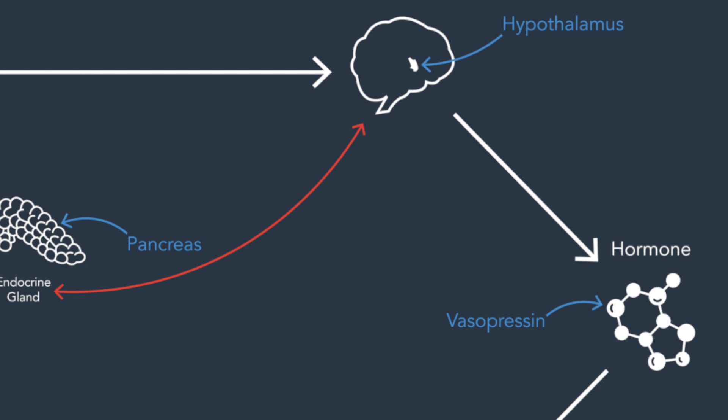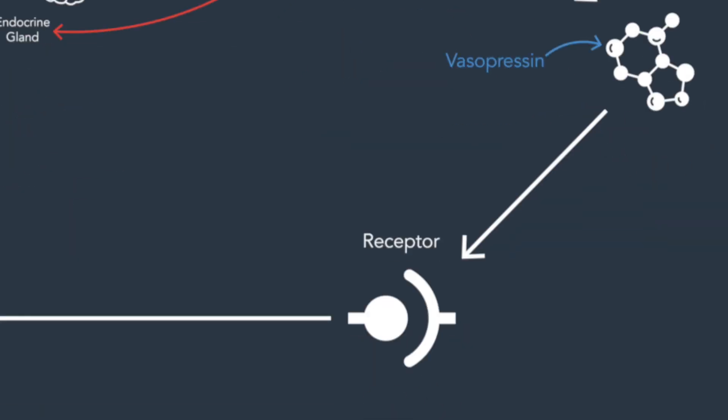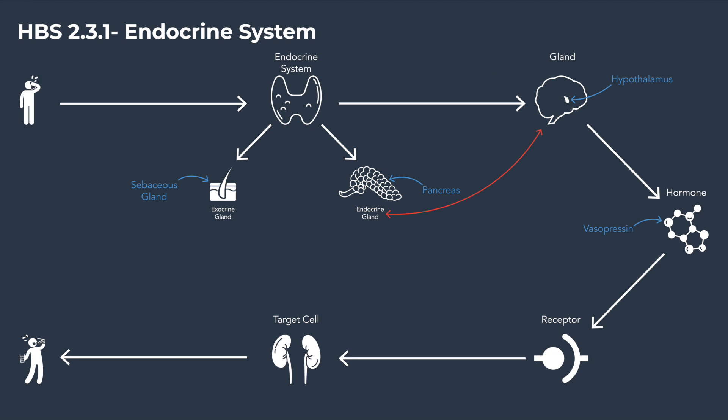So the hypothalamus is going to release a hormone. Over here on the right-hand side, you can see my little chemical diagram — here is the visual. The hormone that the hypothalamus releases is called vasopressin, also called antidiuretic hormone or ADH. This hormone is going to float through the blood and make its way to a receptor on the target cell, which is in the kidney. This hormone's job is to get the kidney to retain more water from the filtrate, which we'll learn about when we learn about the urinary system. In short, the antidiuretic hormone makes you urinate less and makes your urine more concentrated.